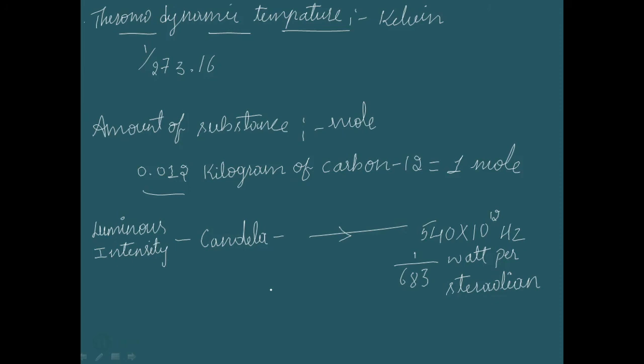Now we have covered how accurately the 7 fundamental units are measured in the SI system. Length, mass, time, current, temperature, amount of substance, and luminous intensity are the fundamental quantities, and we use meter, kilogram, second, ampere, kelvin, mole, and candela to measure those fundamental quantities.